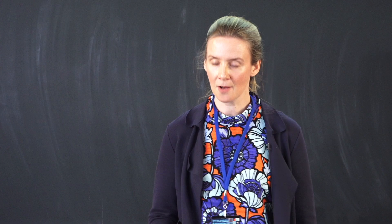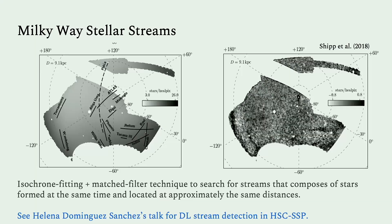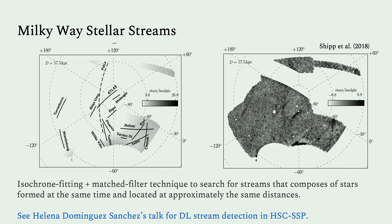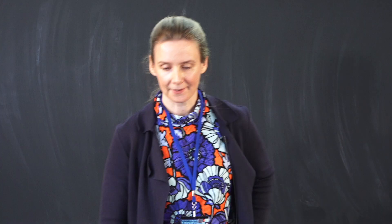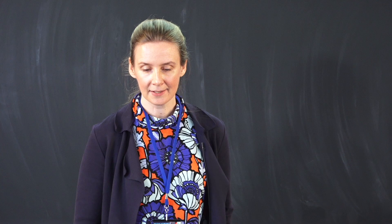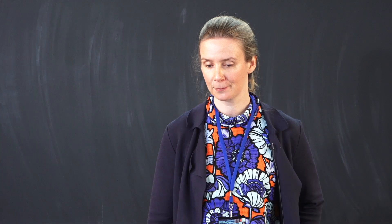The next Milky Way objects are stellar streams, where we use an isochrone fitting and matched filter technique to search for streams composed of stars formed at the same time and located at approximately the same distance from us, that were then spread out as satellite galaxies fell into the Milky Way. There's another talk at this conference about deep learning stream detection in HSC, so you'll hear about a complementary method there.